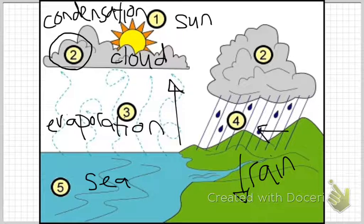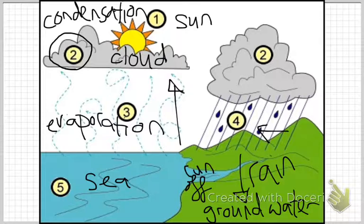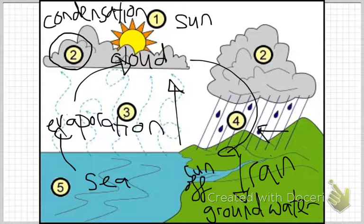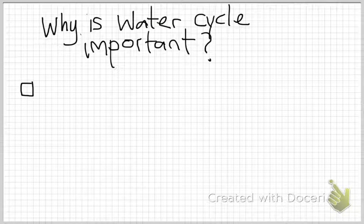Some of the water will go into the ground as groundwater, and some of it, when the Sun shines again, will become water vapor. This is the entire process of the water cycle, and it just keeps going and going and going — round and round, forever.